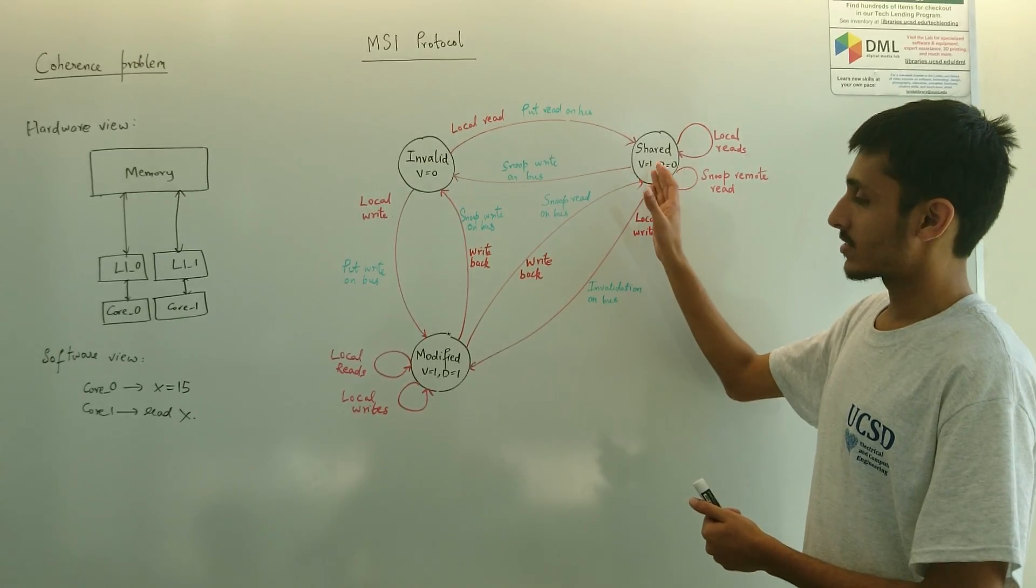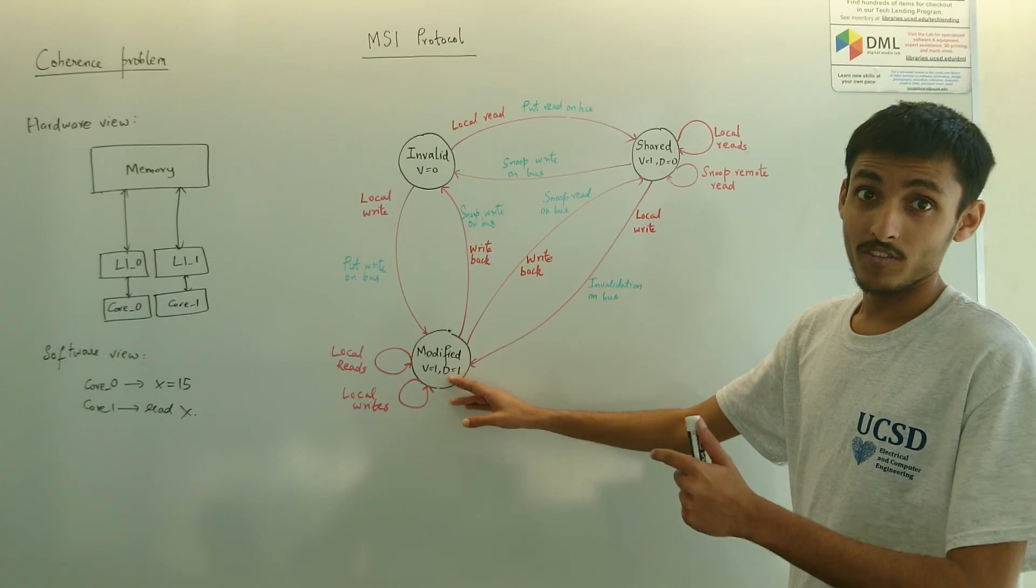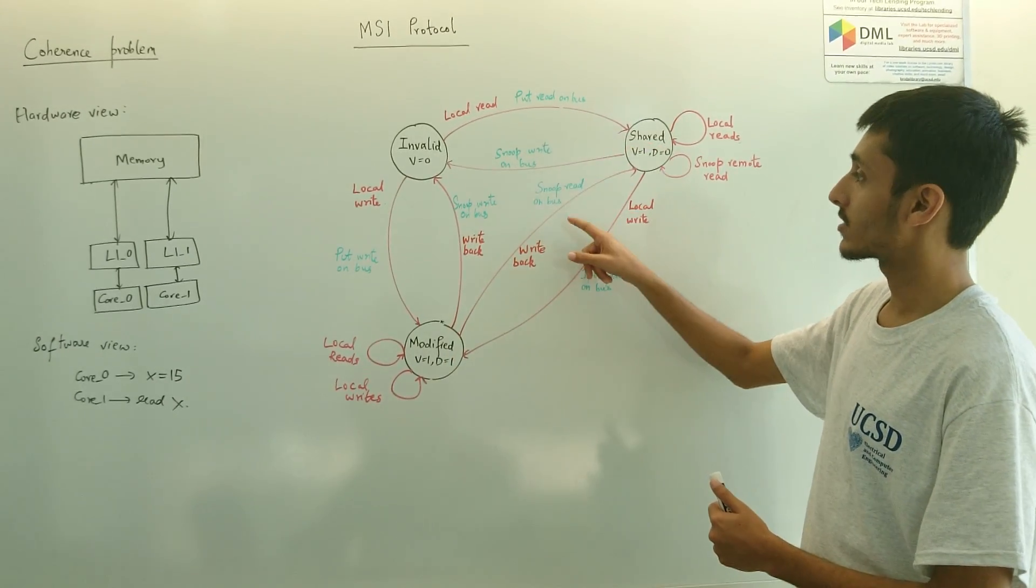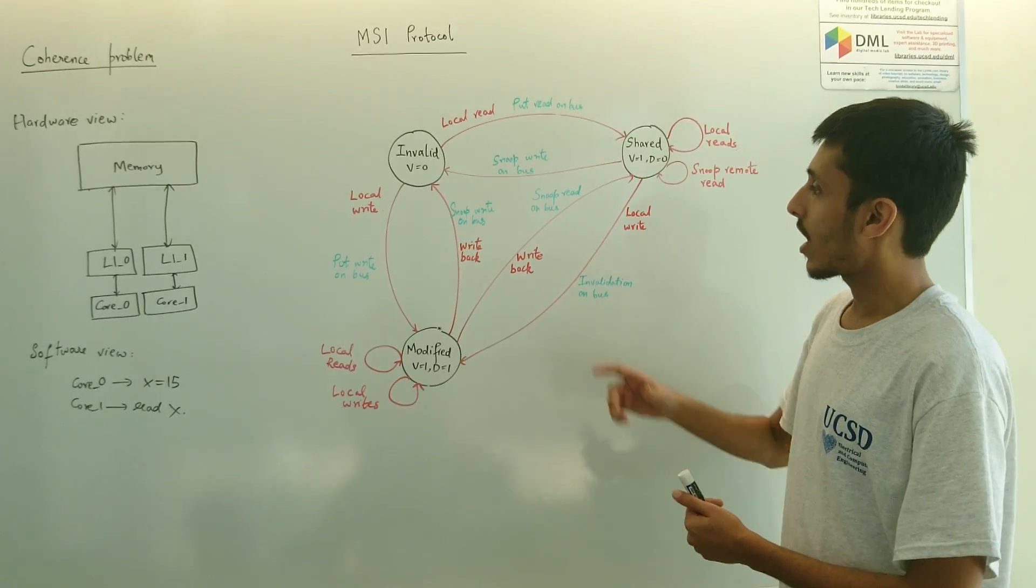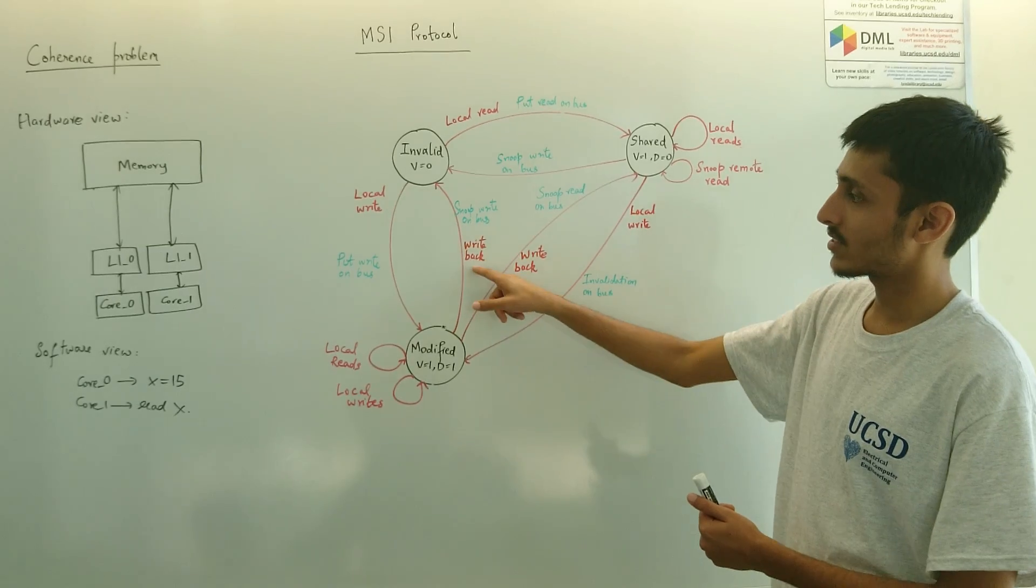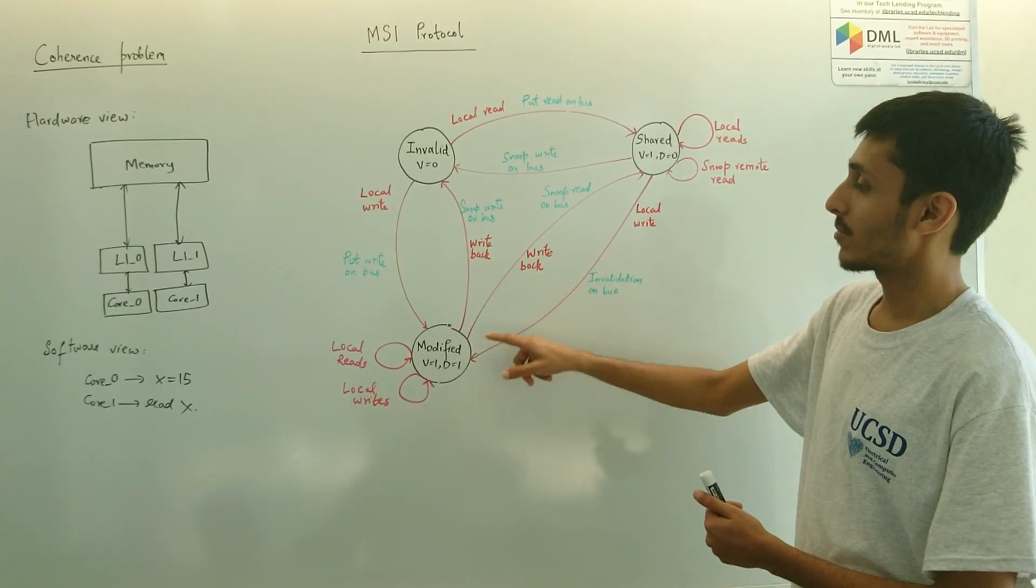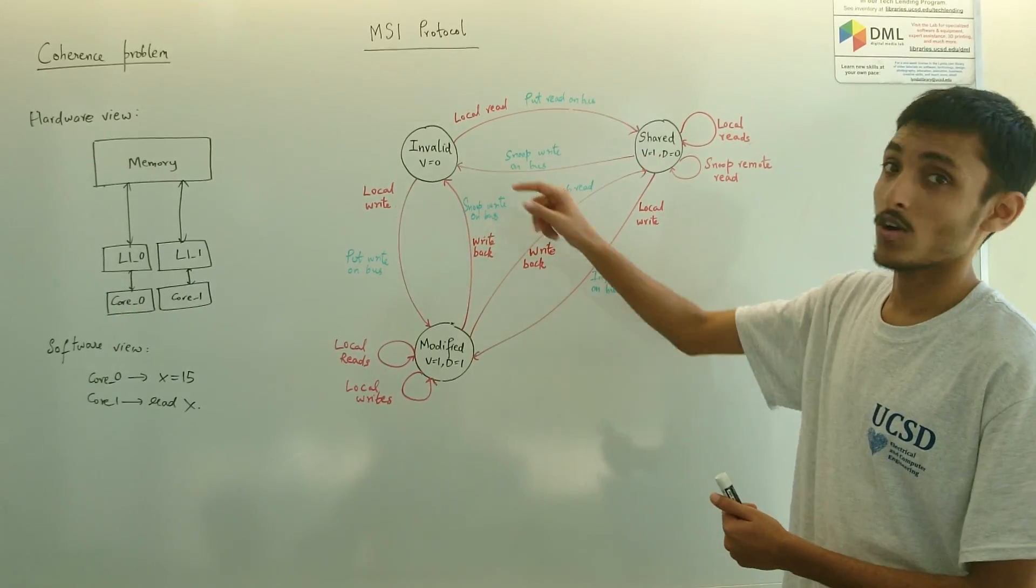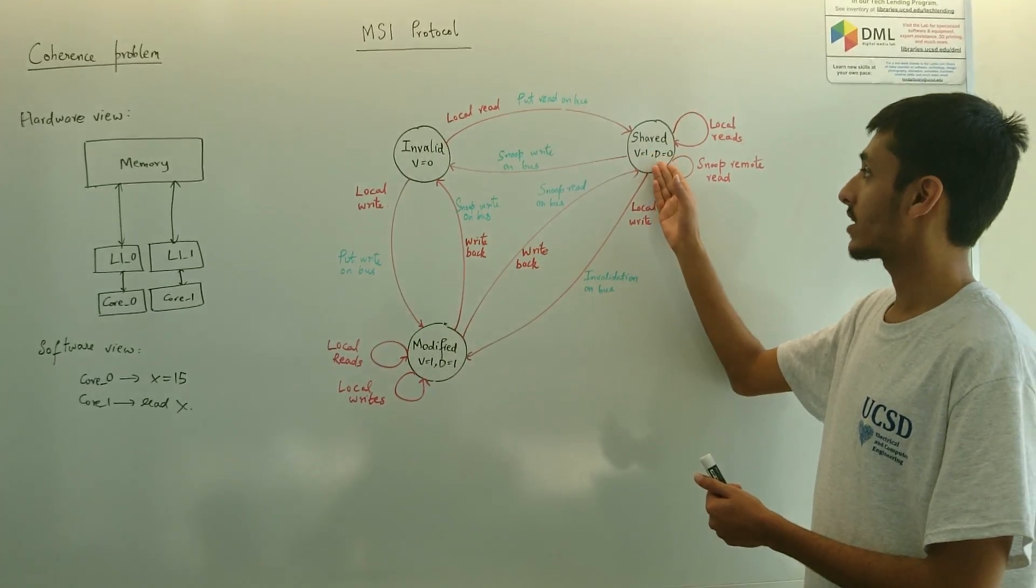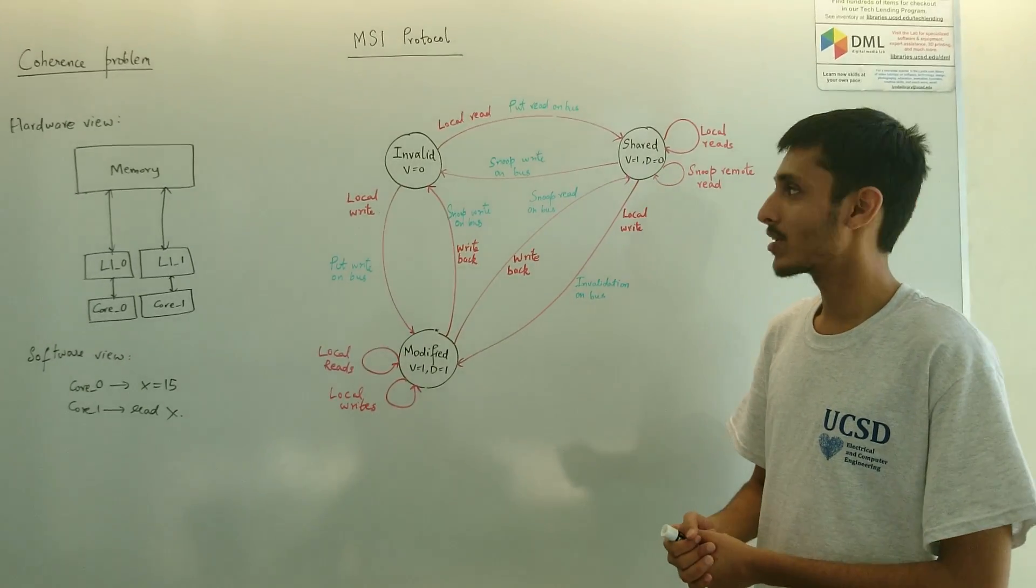This is useful as a shared state only because the line which was in modified state, having the dirty copy, would basically move itself into a shared state when it snoops this read on the bus. How that is executed is the write back is done just in the same way as a local write. However, this time it moves itself to a shared state and not an invalid state. And this is because there are multiple lines that can be in a shared state, all of which have no dirty copy and they can have reads done seamlessly.